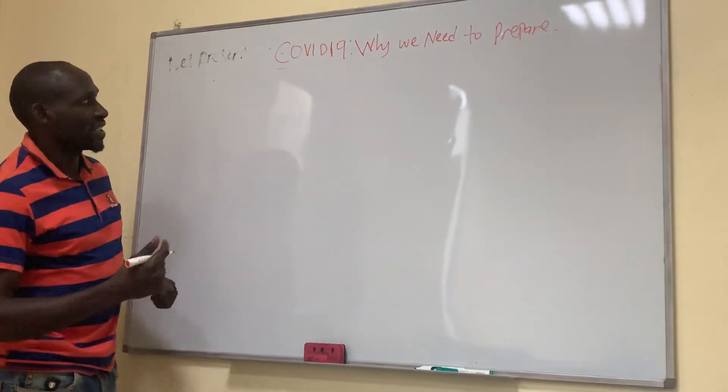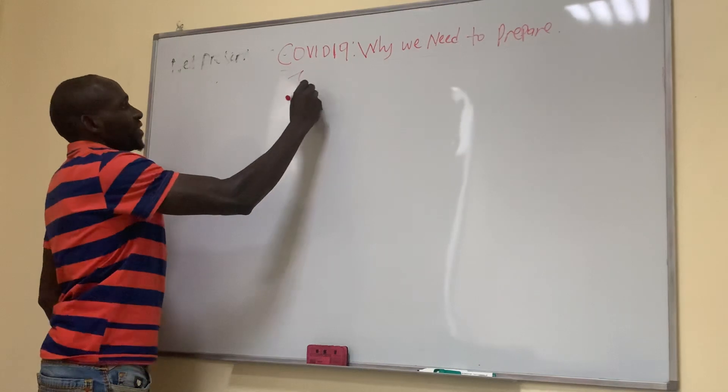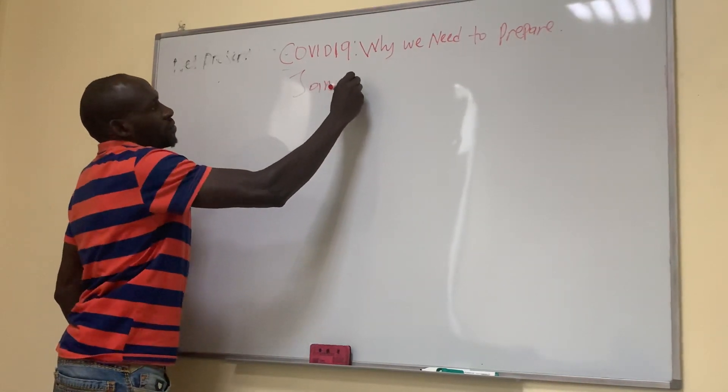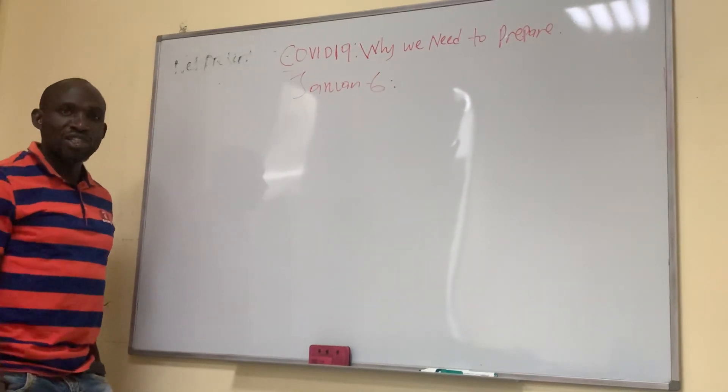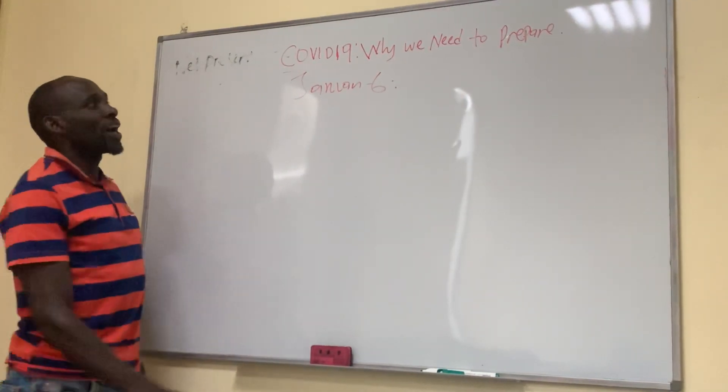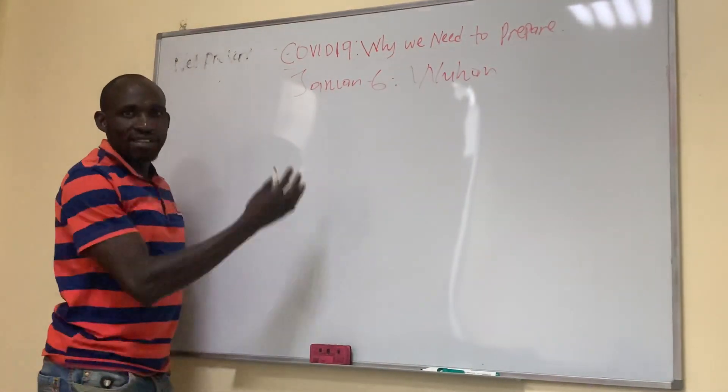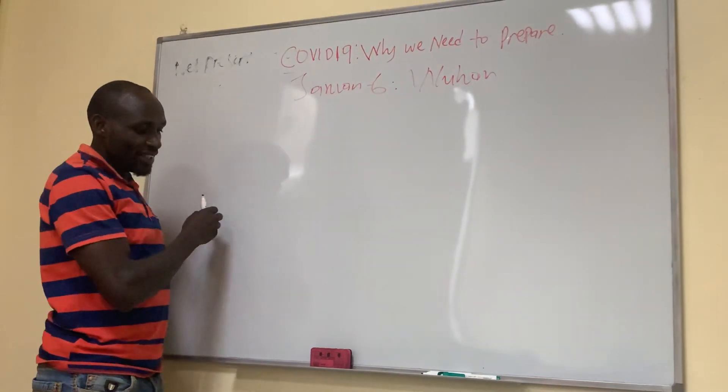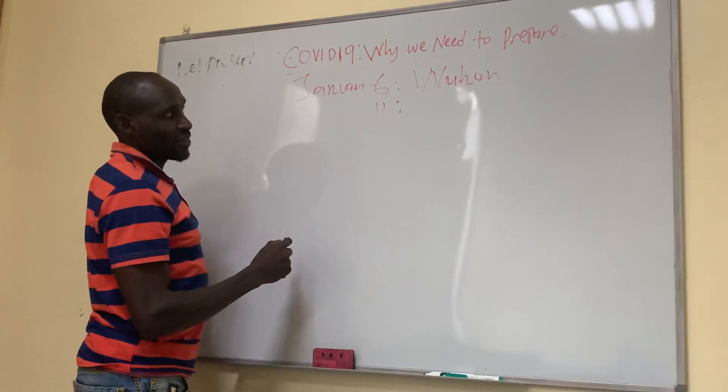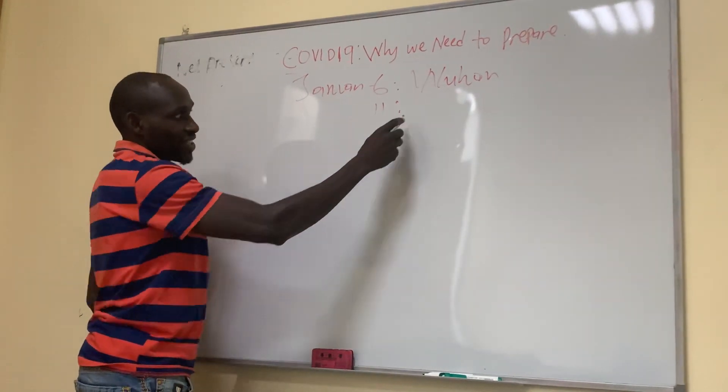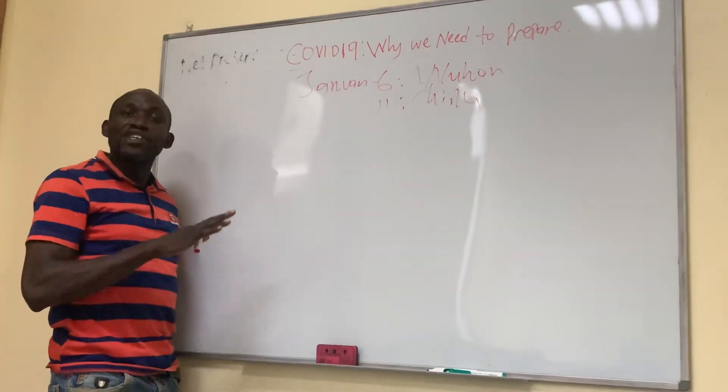So let me give you some statistics. First and foremost, you have to know that on January 6th, the U.S. issued a travel advisory against Wuhan. But there was no single case in the U.S. Then on January 11th, they issued a travel advisory about China. There was still no case.